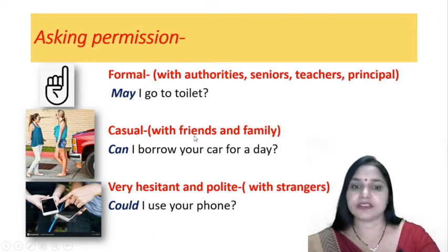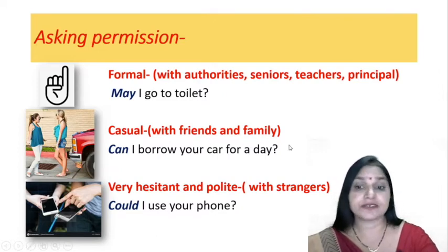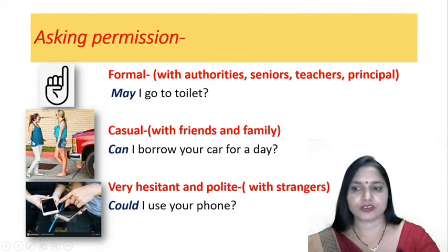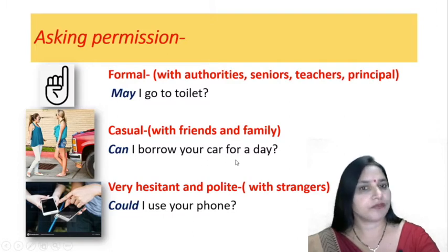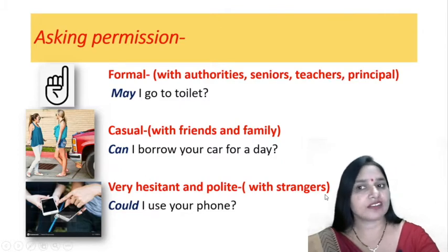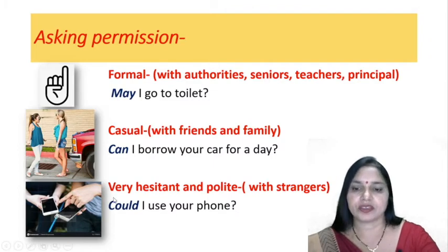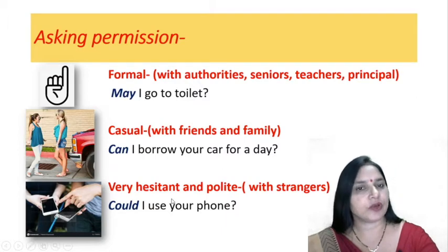For casual situations — that means with friends and family, when you are talking to your sister, brother, mother, father and friends — you use 'can' to ask permission, like 'Can I borrow your car for a day?' These are two friends talking. With strangers, if you are quite hesitant in asking, you say 'Could I use your phone?' because you wish to be polite.